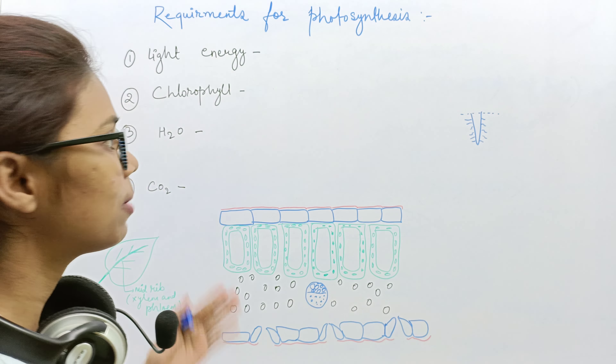These tiny pores are called stomata. Stomata are tiny pores which are present on the surface of the leaf. They help in the exchange of gases. Stomata release oxygen, inhale CO2, and also release water through the process of transpiration.